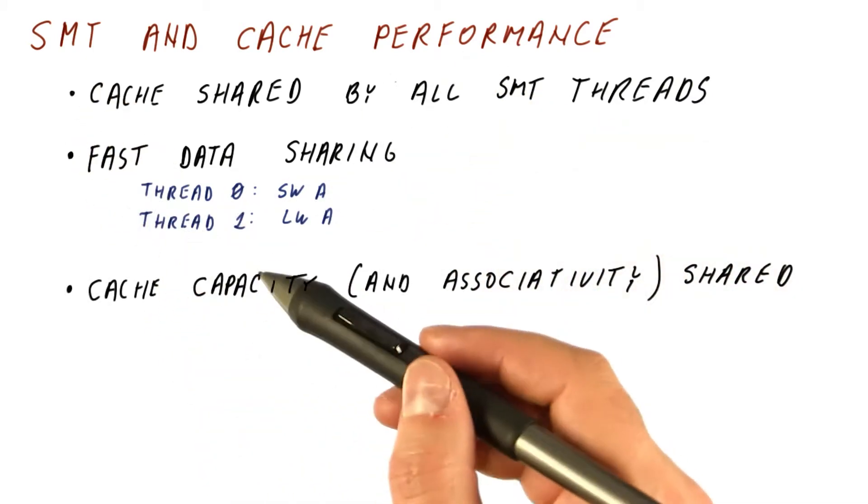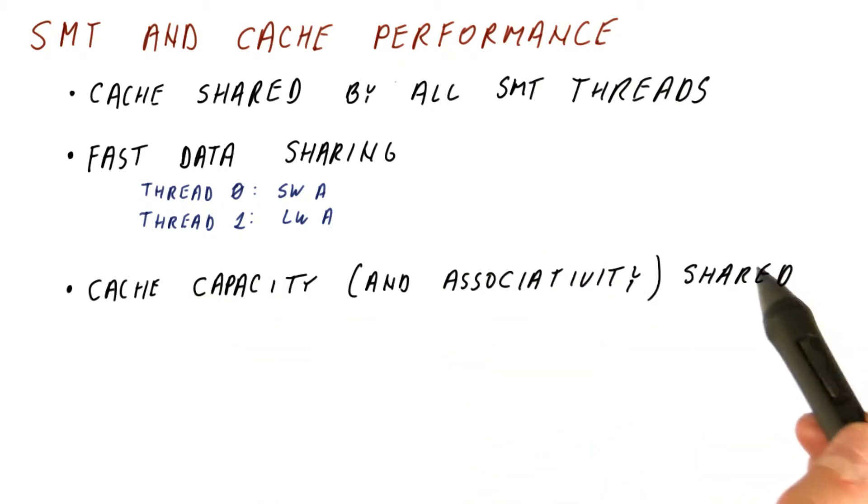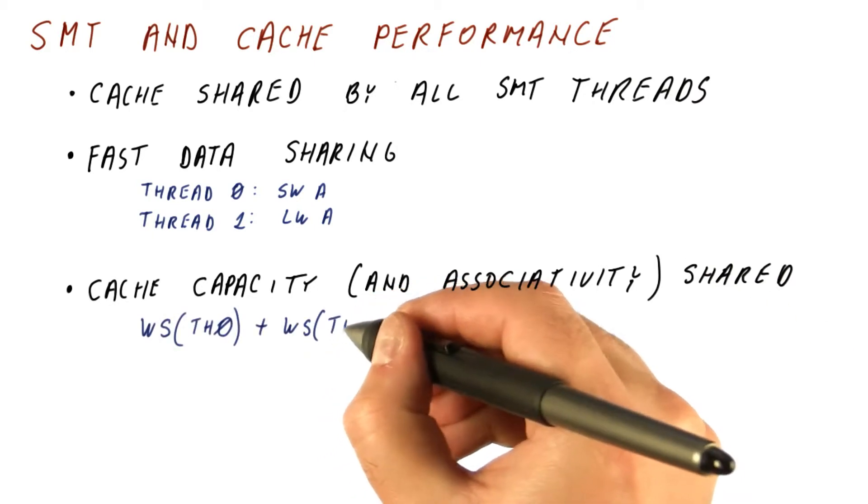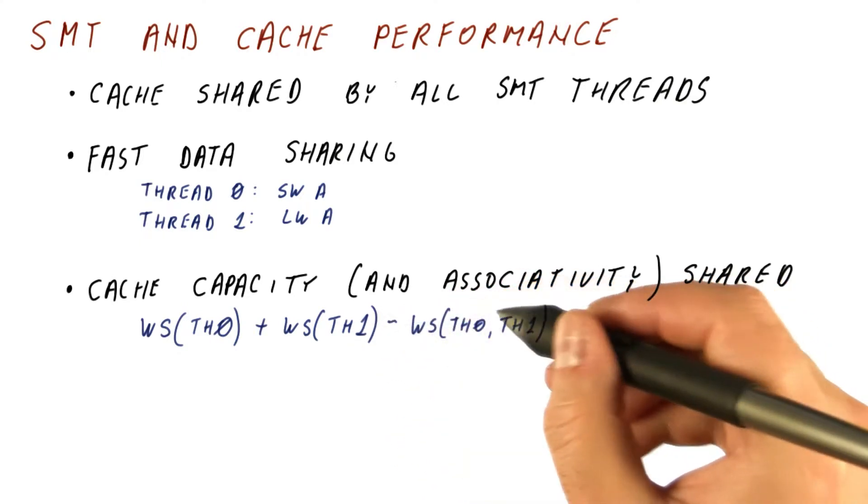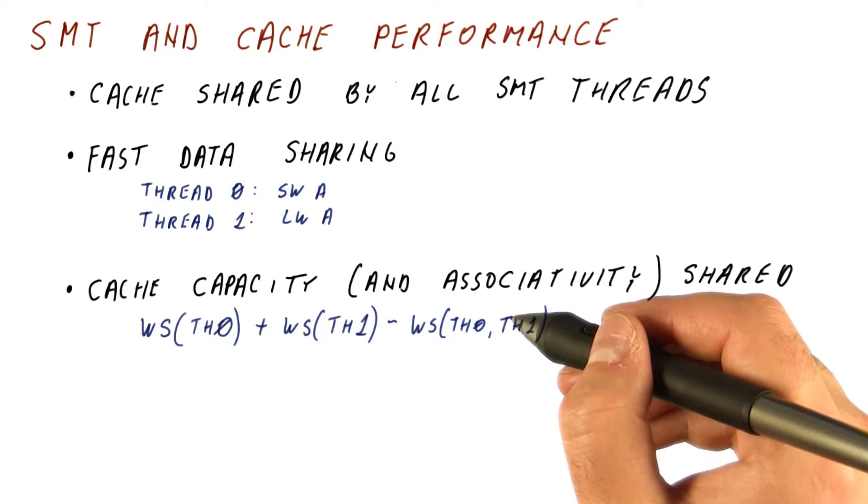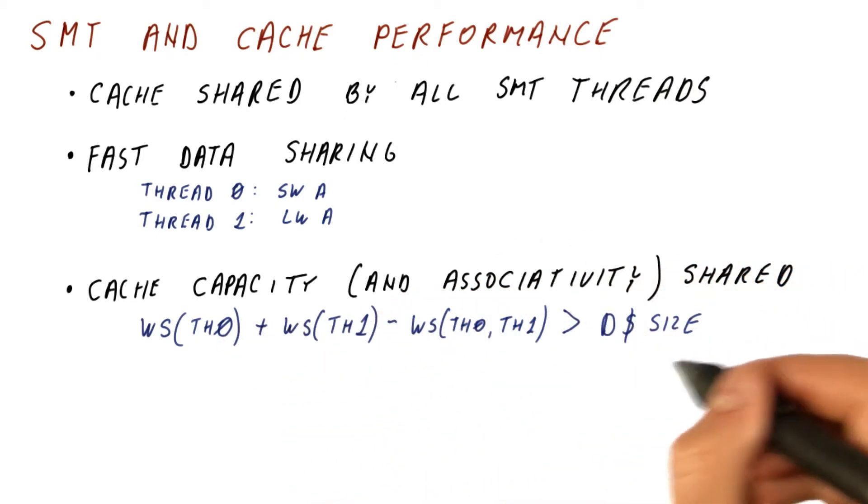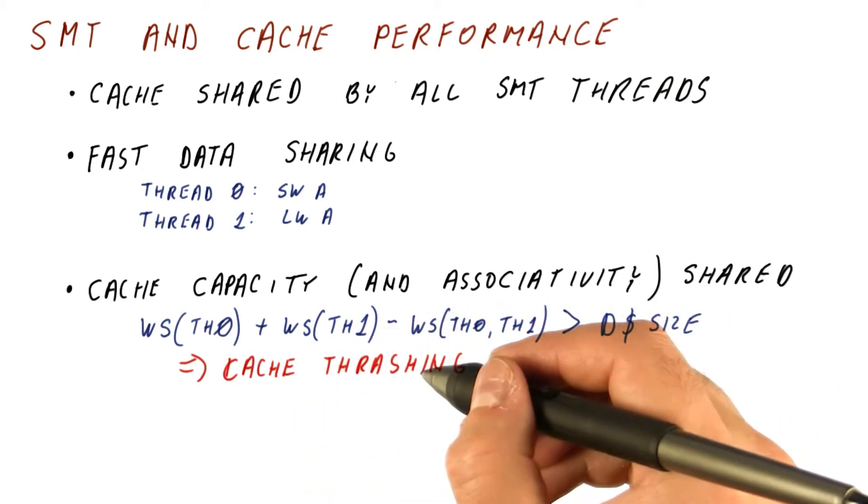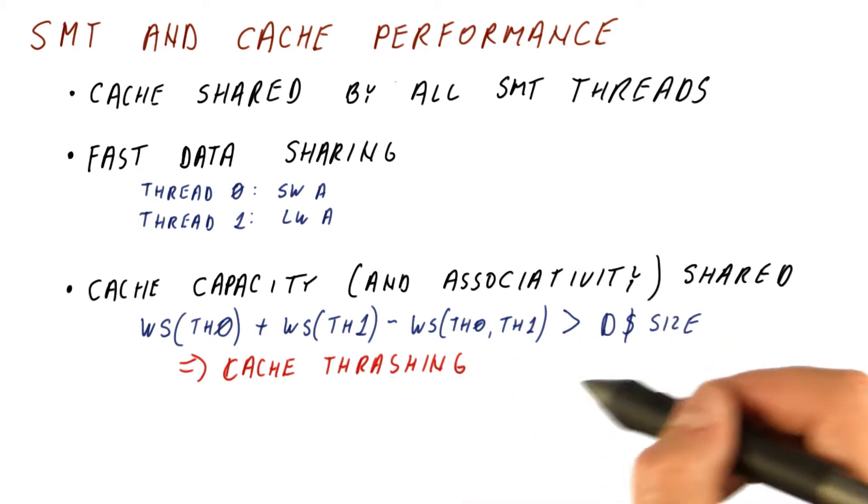But when we have an SMT processor, the cache capacity that we have and its associativity is shared by all of the threads. So if the working set of thread zero plus the working set of thread one, minus the part of the working set that they have in common, which would be counted twice if we did this, exceeds the data cache size, we get what is called cache thrashing. Pretty much the data no longer fits in the cache and we get a lot of cache misses.